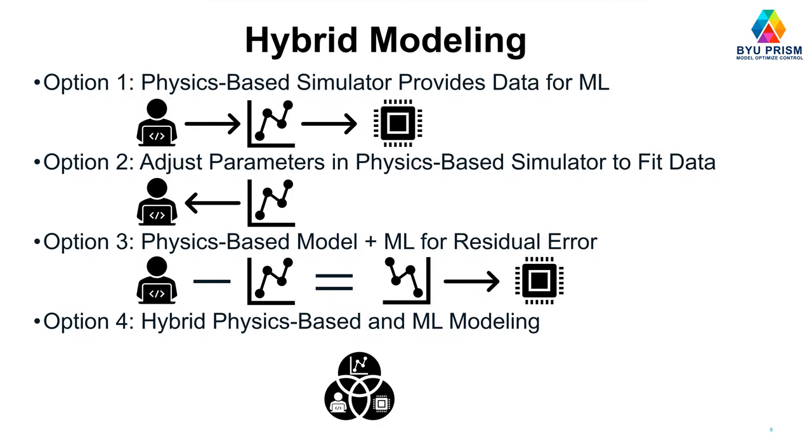So we're going to be taking a hybrid approach to doing modeling and control. Where in the first option, we might use a physics-based simulator. In this case, let's say we have a person here that represents our physics-based a priori knowledge. And then that person develops a model, maybe generates some simulated data, and then feeds that to this processor icon, which is a representative of machine learning. And so the machine learning learns the physics-based principles just through the output or the generated data. We can also use data to feed back into the physics-based simulator to adjust parameters of that physics-based simulator.